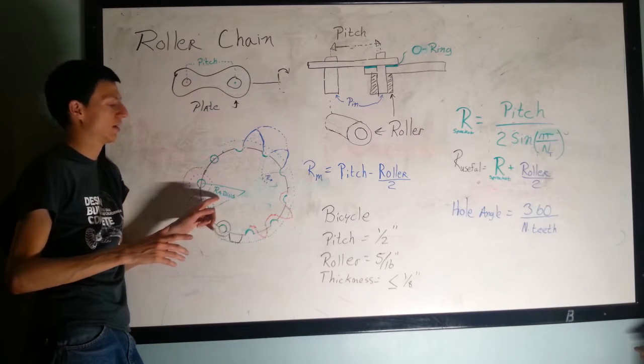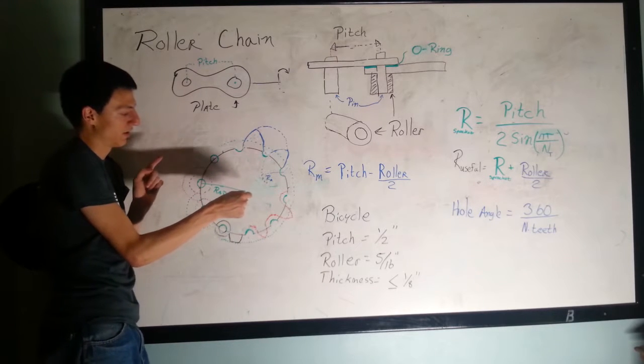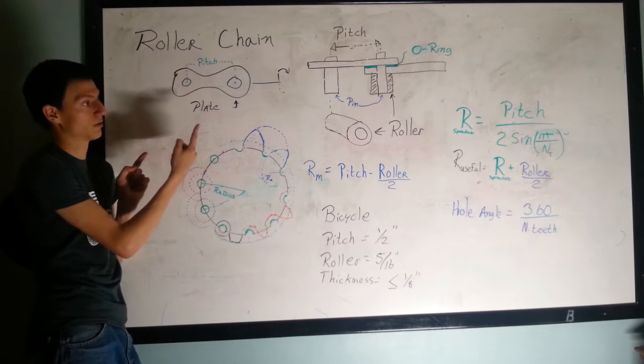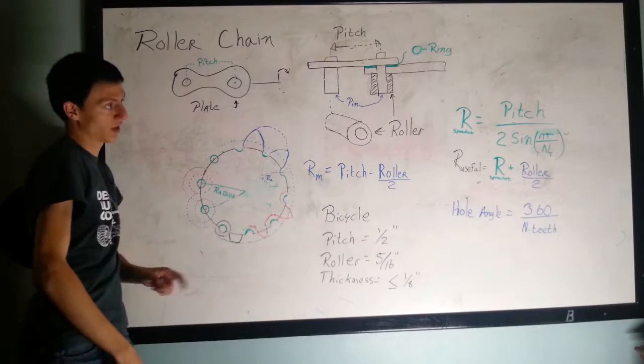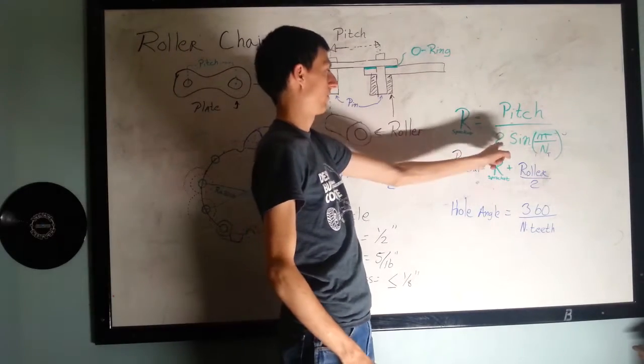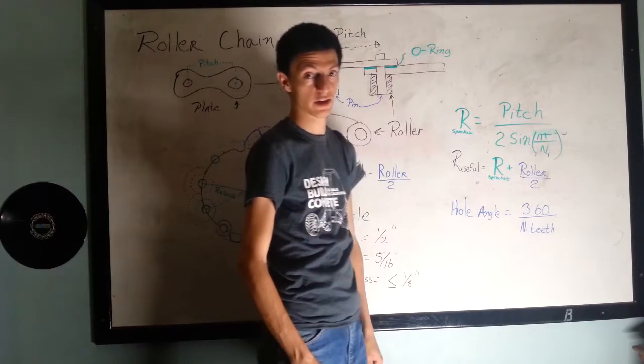It's the distance from the center of the sprocket to the center of the little hole on the side where the chain goes. That radius here is chain pitch divided by two times the sine of pi over the number of teeth that you want to have on the sprocket.